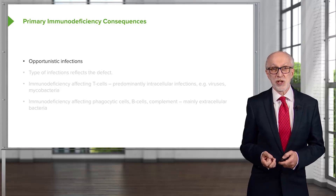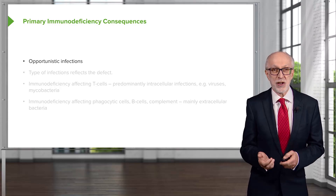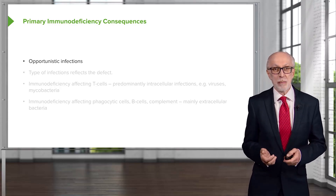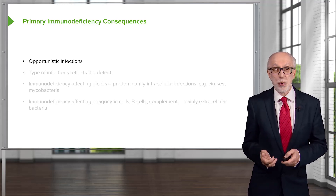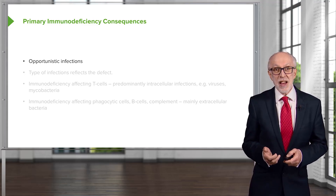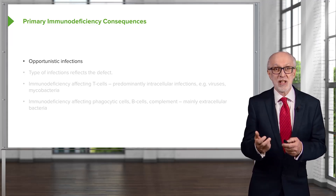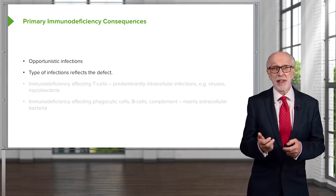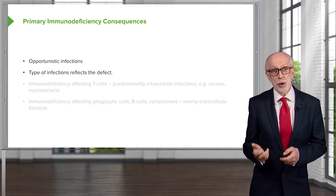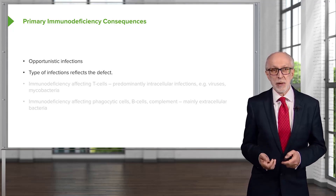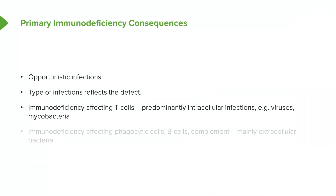The consequences of primary immunodeficiency are that we see opportunistic infections — infections that most of us most of the time are not troubled by and will deal with perfectly adequately. But in patients with primary immunodeficiency, these infectious agents take the opportunity of the defective immune response to establish disease. The type of infections actually reflects the defect. A defect in phagocytic cells will result in a different spectrum of infections to, for example, a defect in B lymphocytes. Immunodeficiency affecting T cells results in predominantly intracellular infections — for example, viruses, mycobacteria and so forth — whereas immunodeficiency affecting phagocytic cells, B cells, and complement mainly results in extracellular bacteria.